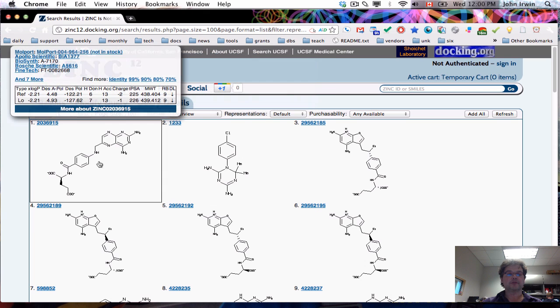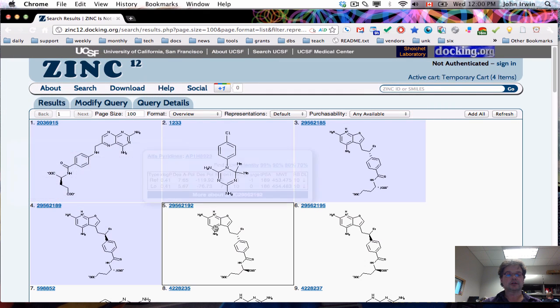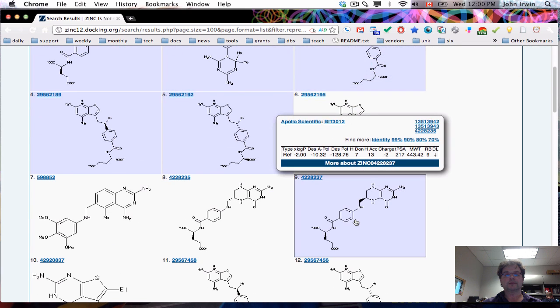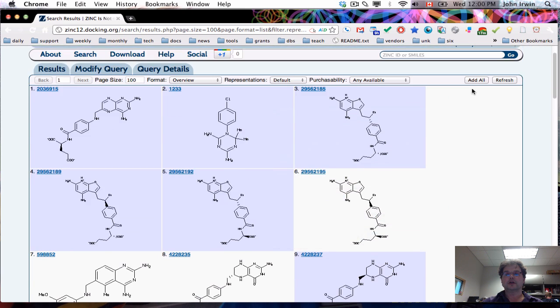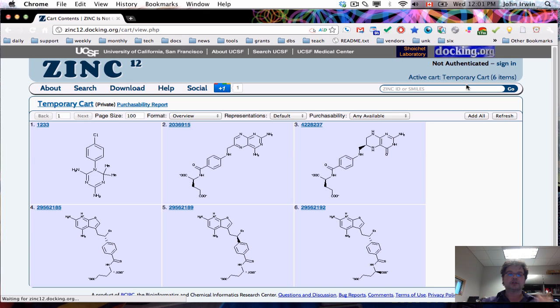Now if you want to buy them you can simply put them into your shopping cart like this, click on each one that you want, and then we'll go to the shopping cart - you don't need to sign in to do this. Now we've got our six molecules that we've added in the shopping cart.